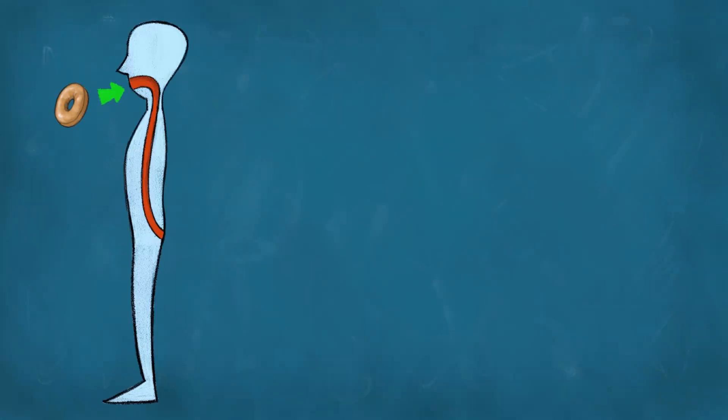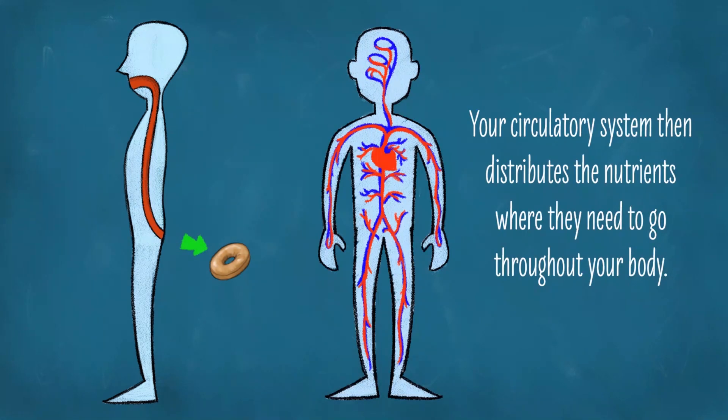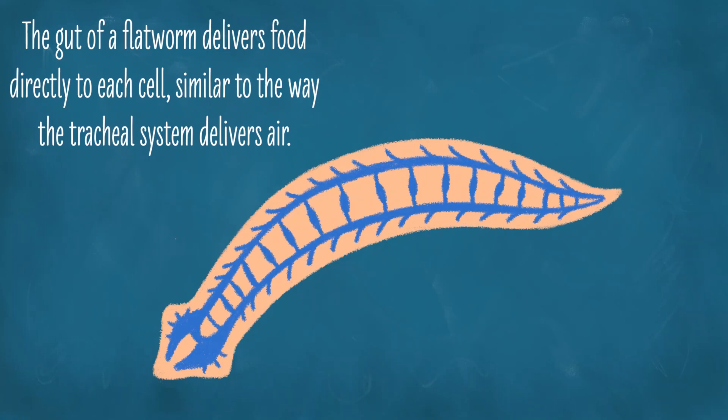But what about food? Flatworms do eat — they have a mouth, and if you remember from our video about your disturbing similarity to bagels, they generally don't have an anus. So count your lucky stars that your mouth doesn't have to do double duty. In you, food enters at the far end of your — also known as your mouth — and exits out of your anus without ever really entering your body per se. Nutrients are absorbed into your circulatory system and distributed to where they need to go. Flatworms don't have a circulatory system, so what do they do?